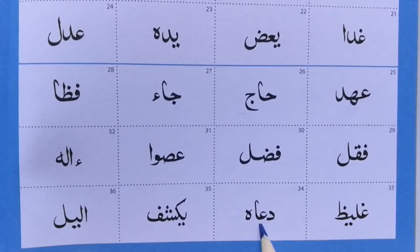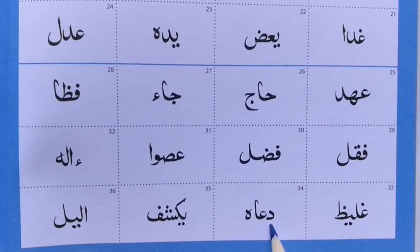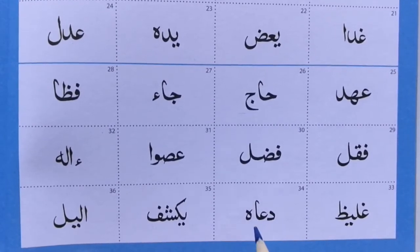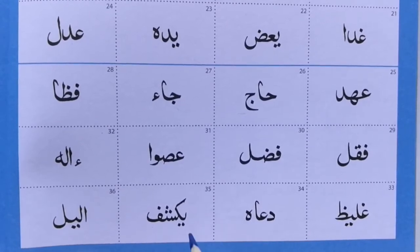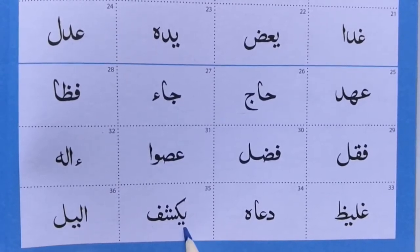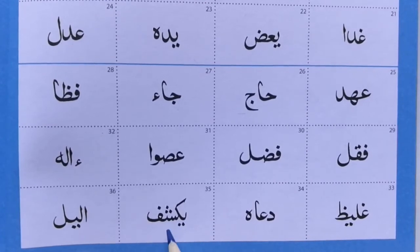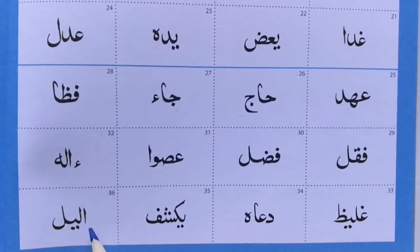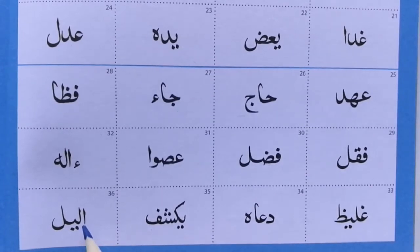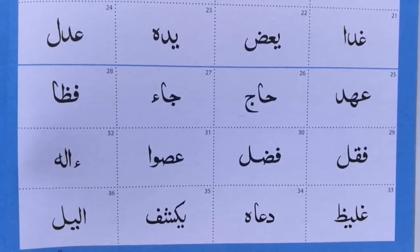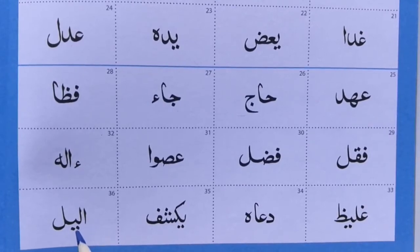Next one: Daal — notice he's not joining to the next letter, Daal, because it's the end letter. Daal, Ayn, Alif, Ha. Same with the Alif — it's not joining that Ha because it's a naughty letter. Ya, Ka, She, Fa, Alif, Laam, Ya. Laam, Alif, Laam, Ya, Laam.